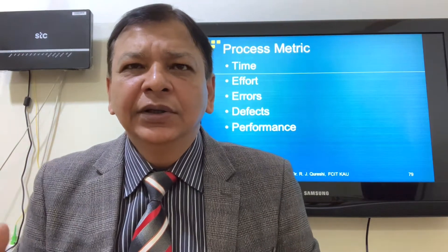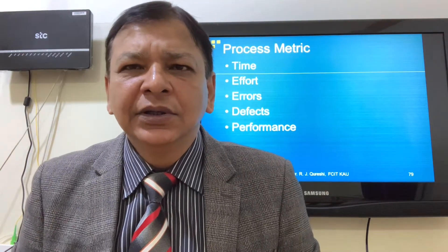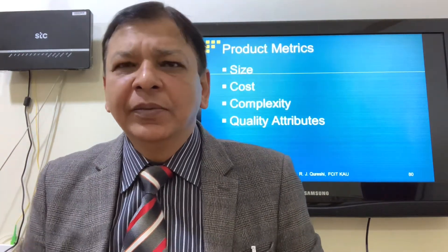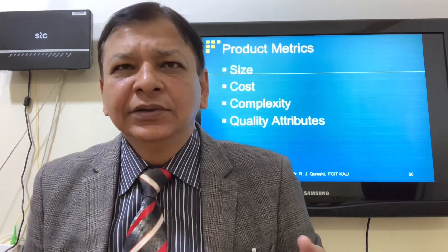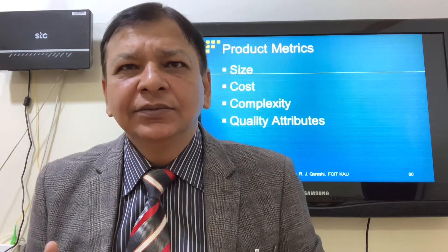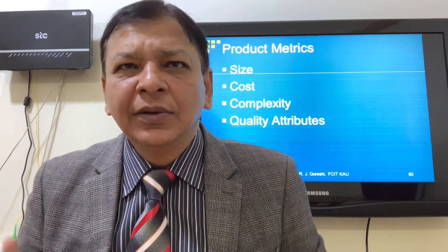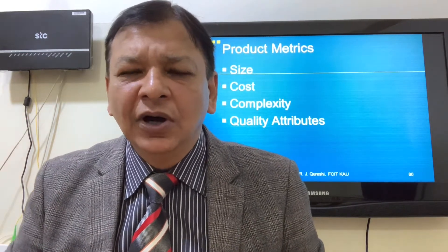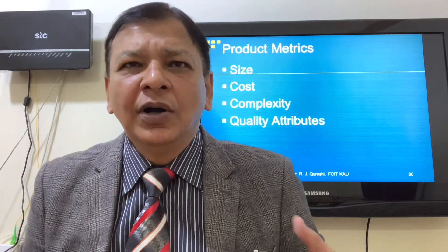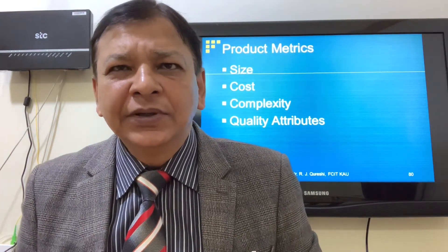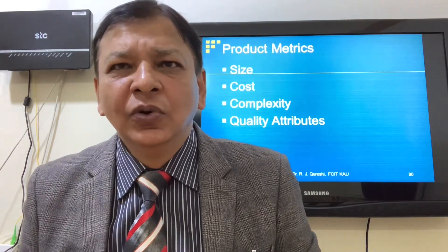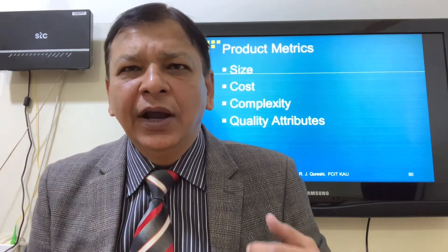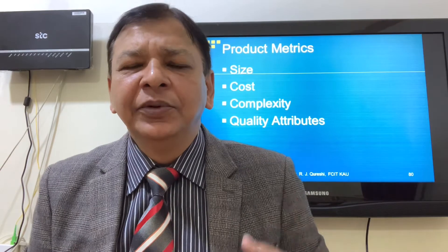Process metrics cover time, effort, errors, defects, and performance. Product matrix covers size in terms of lines of code, functions, and objects, as well as cost and complexity — classified as low, average, or high.